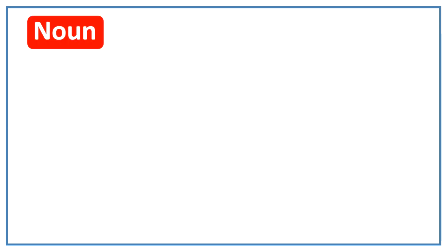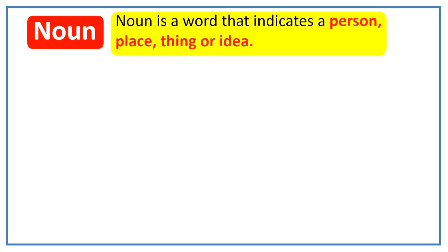What is a noun? Noun is a word that indicates a person, place, thing or idea.